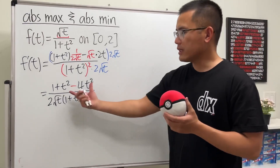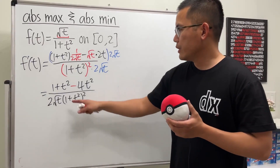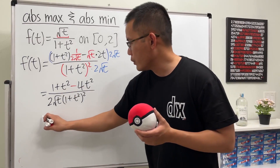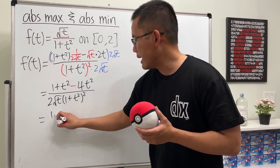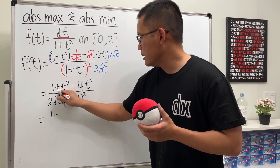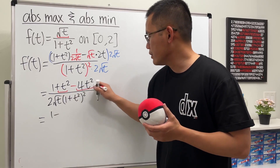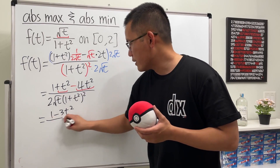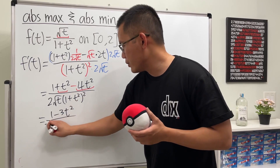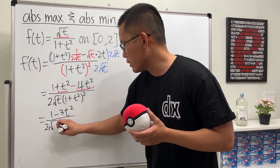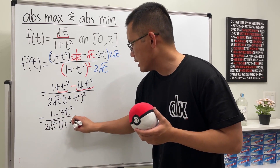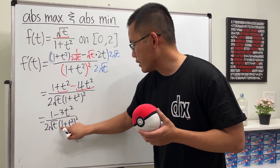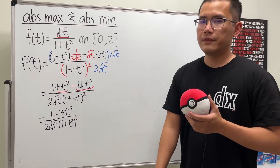On top, we can simplify a little bit — we can just subtract. So all in all, we get 1 minus 3t squared, over 2 square root of t times 1 plus t squared, and then squared. That's our derivative.